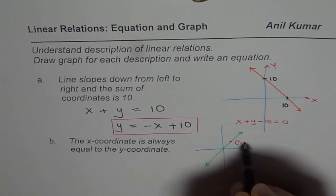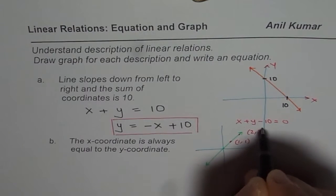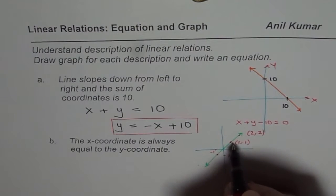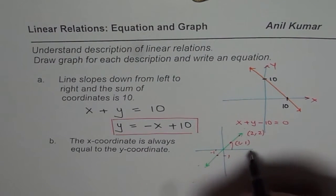Then the points will be like, you would consider a point as 1, 1, right? 2, 2, like this. So these are the points on the line: minus 1, minus 1. Slope of the line will be rise and run, same values, is 1.